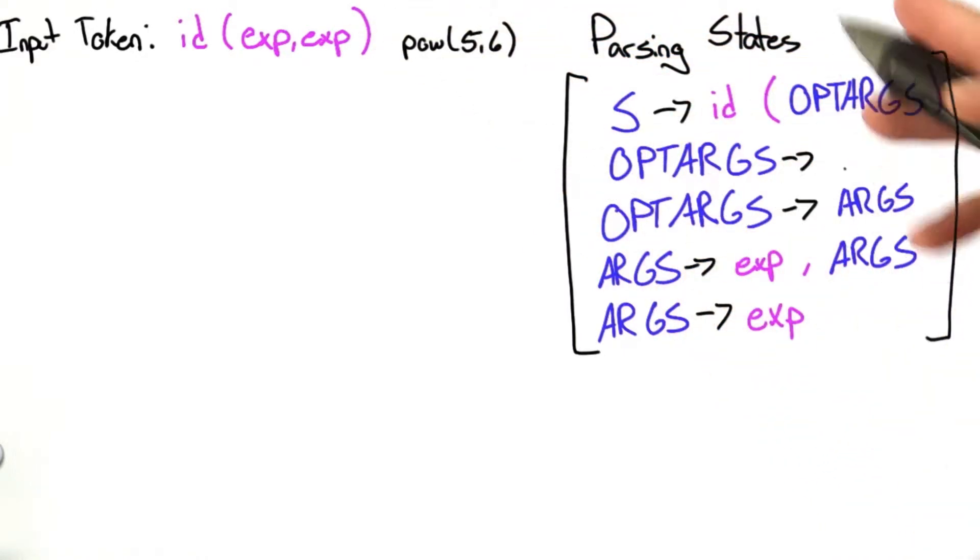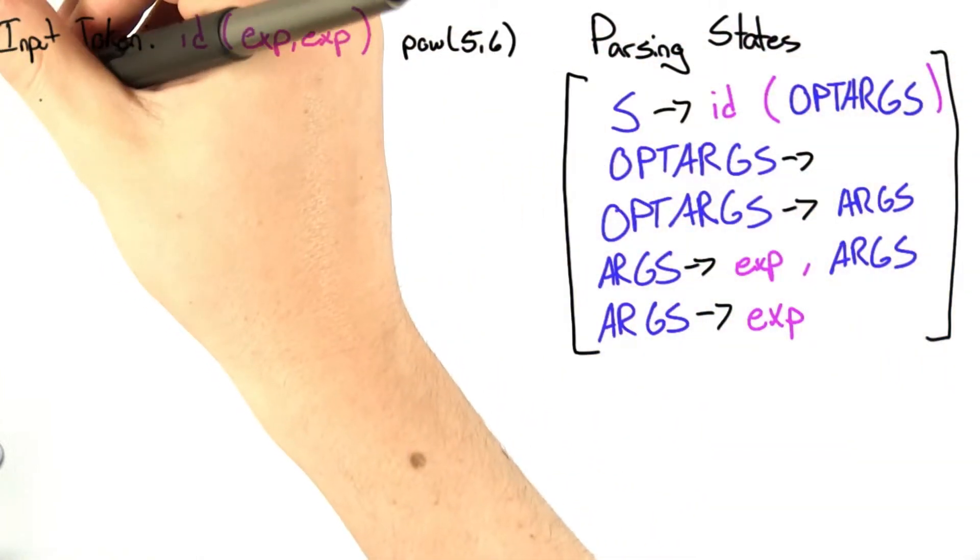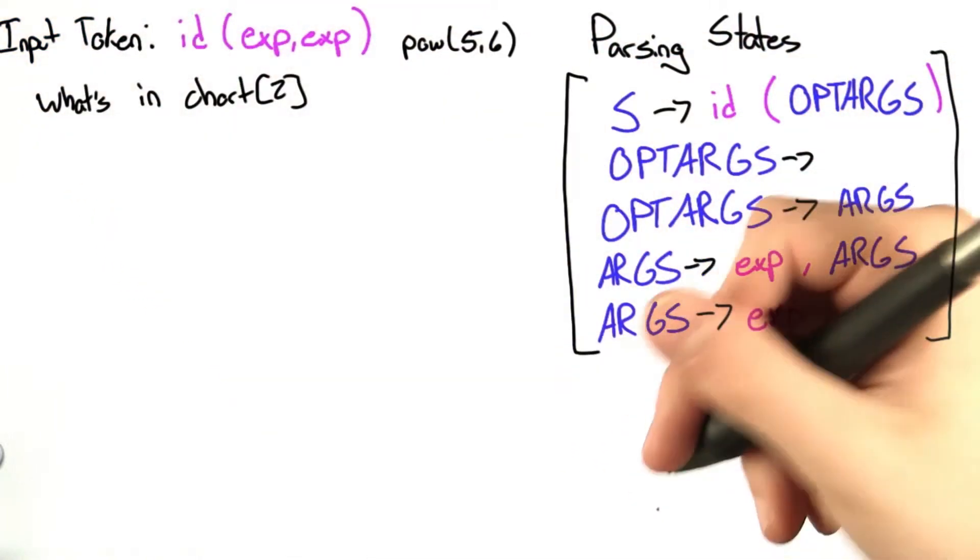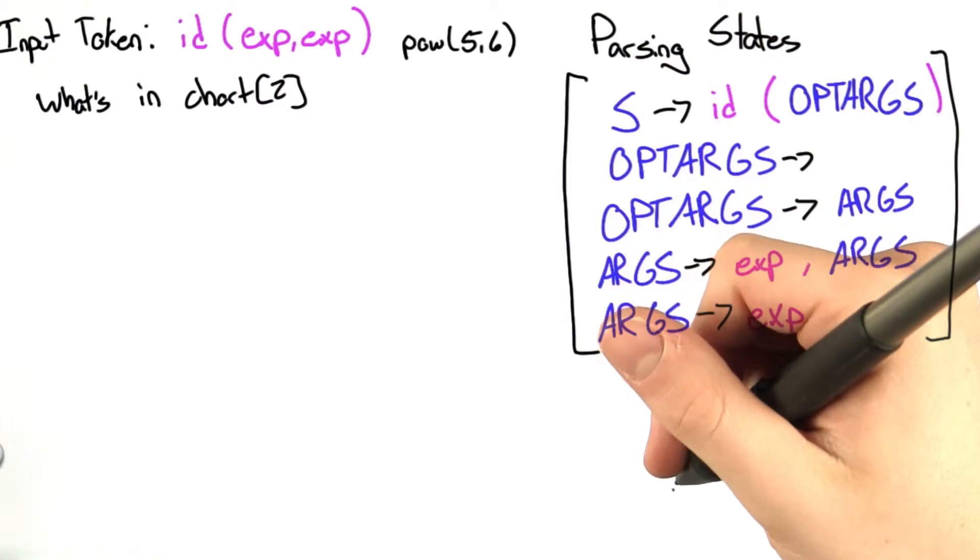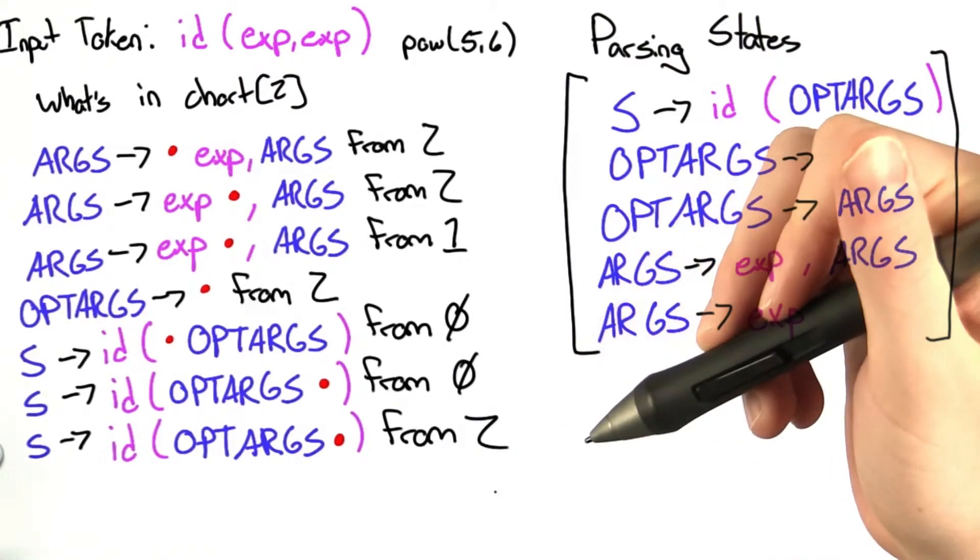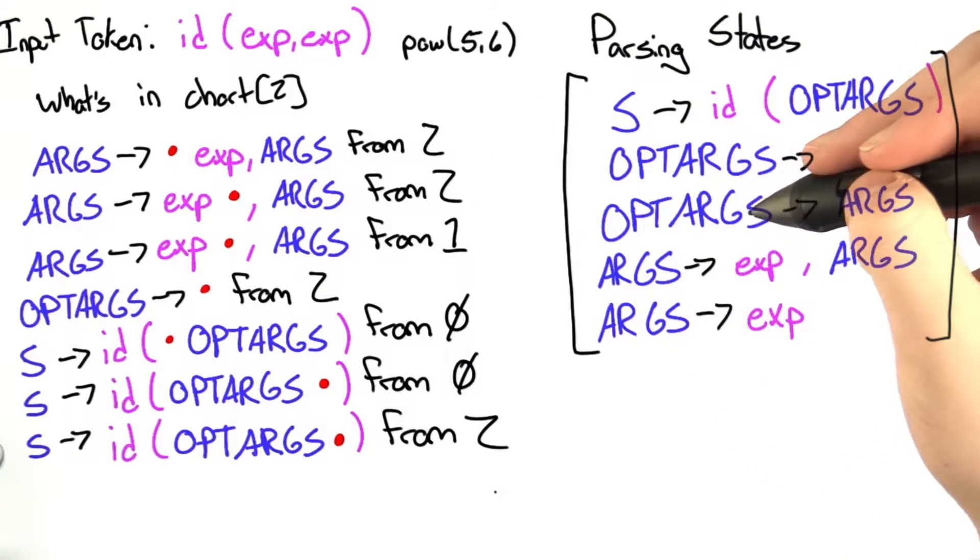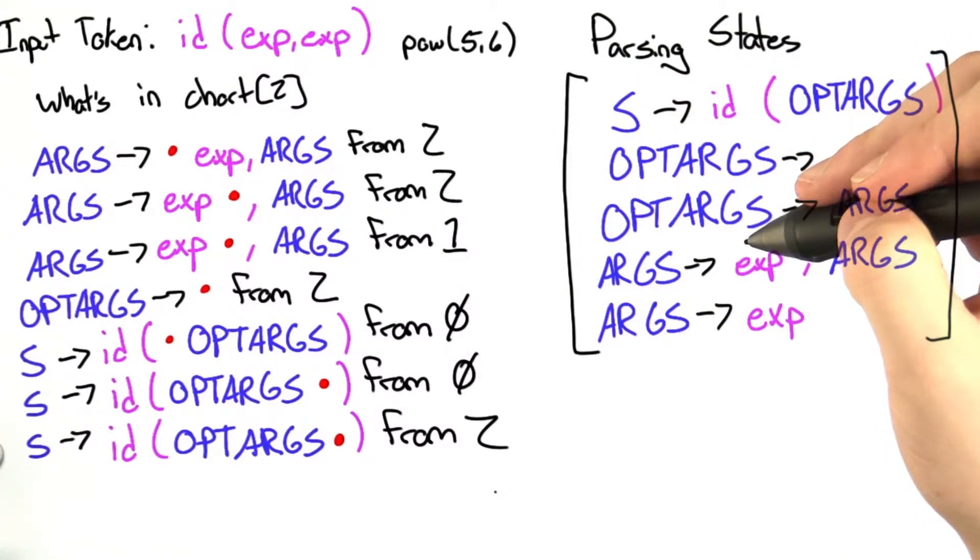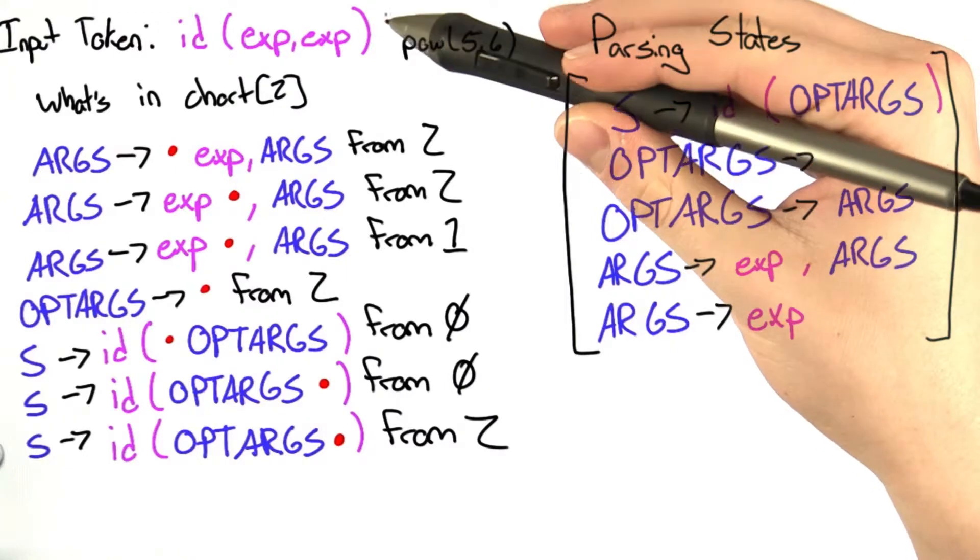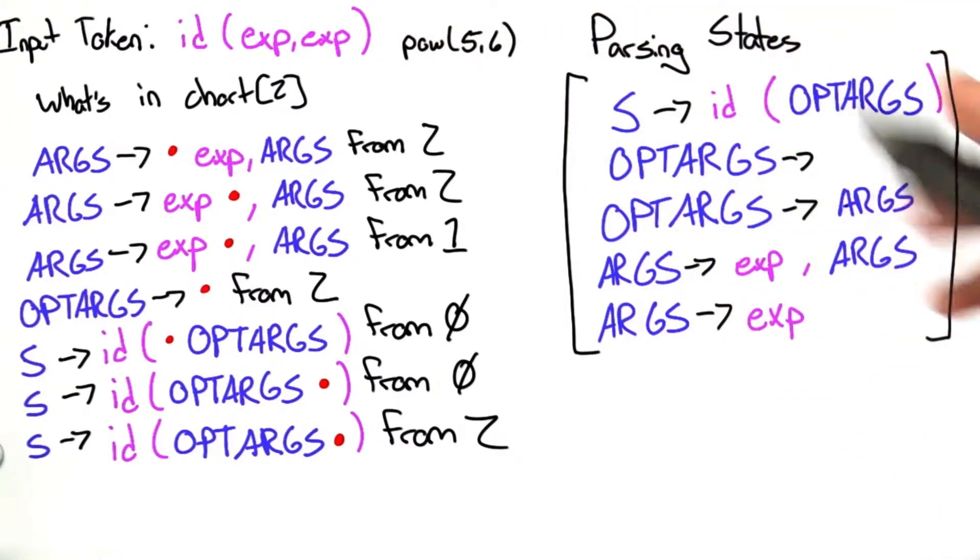Now when we parse this, what we want to ask is what is in chart 2, the third entry in our chart. We're given a set of rules that may be in the chart, and I'm just going to go through them real quick. Here's our choices, and we're trying to figure out what's in the second entry in our chart when we parse this list of tokens in this grammar.